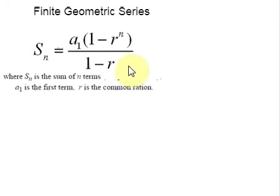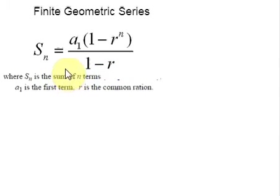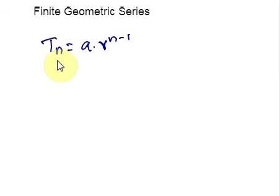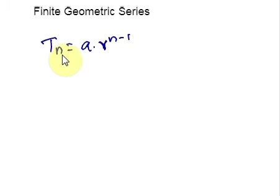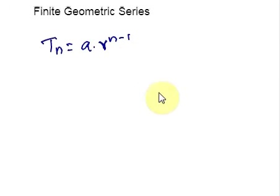Let us start with the formula. When we sum a known number of terms in a geometric sequence, we get a finite geometric series. We generate a geometric sequence using the general formula: Tn = a times r raised to n minus 1, where n is the position of the sequence, Tn is the nth term, a is the first term, and r denotes the constant ratio.